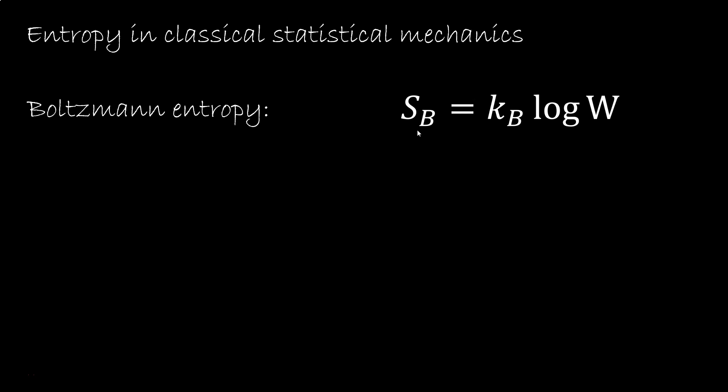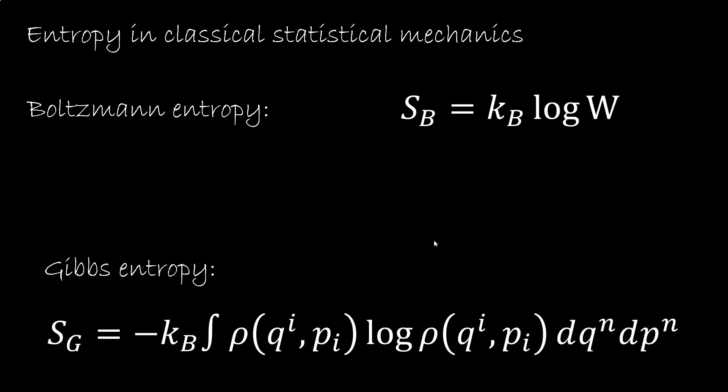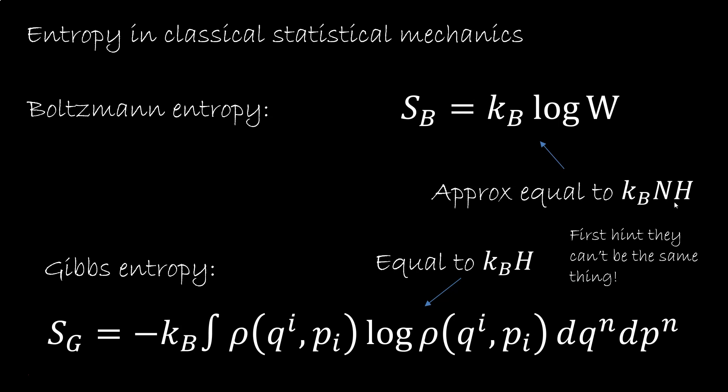The Boltzmann entropy, Kb log W, and the Gibbs entropy, minus Kb rho log rho. So the Gibbs entropy is simply Kb times the Shannon entropy, while the Boltzmann entropy is approximately equal to Kb Shannon entropy. The fact that there is a factor of n should already be a hint that the two expressions cannot be the same thing.